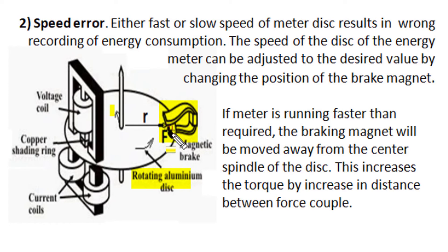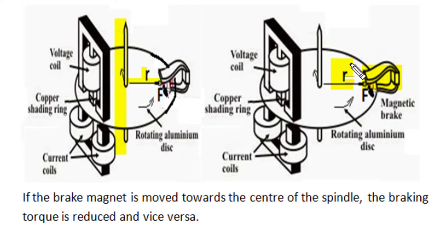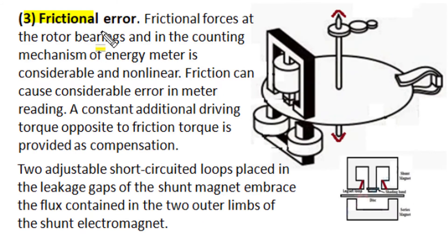The braking torque is equal to the product of force and the radial perpendicular distance between the spindle axis and the brake magnet position. If a meter is running faster than required, we move the brake magnet away from the central spindle axis — this increases the radial distance, increases braking torque, and reduces speed to the desired level for accurate measurement. When the brake magnet is moved closer to the spindle, the radial distance decreases, braking torque reduces, and the disk rotates at a faster speed.